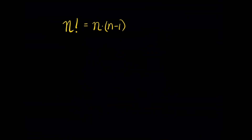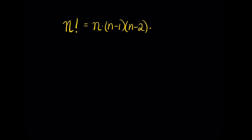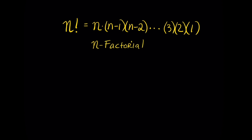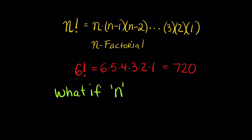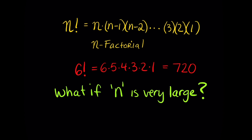n factorial stands for n times the number before it, n minus 1, times the number before that, n minus 2, and so on all the way down to 3 times 2 times 1. n factorial multiplies all of these numbers together. For example, 6 factorial would be 6 times 5 times 4 times 3 times 2 times 1, which equals 720. You can see that factorials get large pretty quickly — but what if n is very large?